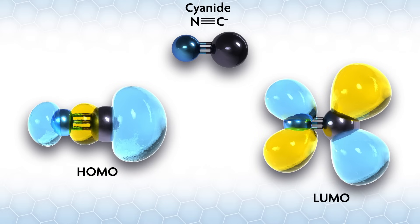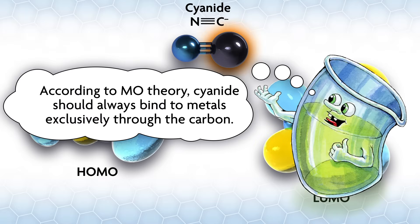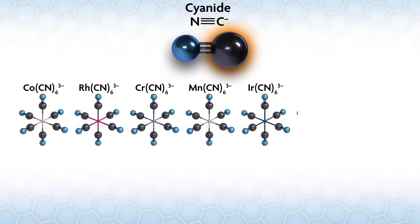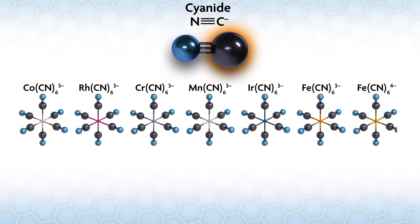Cyanide, like CO, has both its highest occupied molecular orbital and lowest unfilled molecular orbital on carbon. As a result, according to MO theory, cyanide should always bind to the metal exclusively through carbon. This certainly is supported by the data — there are literally thousands of structurally characterized metal cyanides, and these are very common complexes known for decades.